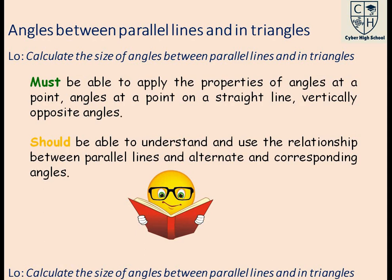There are several types of angles. Acute angles are those between 0 and 90 degrees. At 90 degrees we call the angle a right angle. Angles between 90 and 180 degrees are called obtuse angles, and when an angle is exactly 180 degrees it is called a straight line. Finally, reflex angles are those between 180 and 360 degrees — any angle in this range is called a reflex angle.